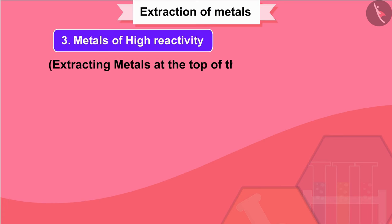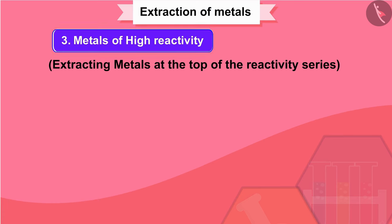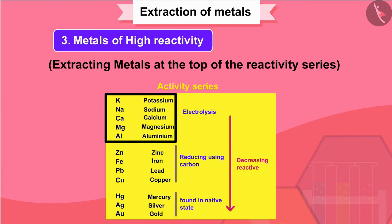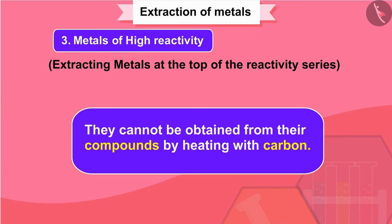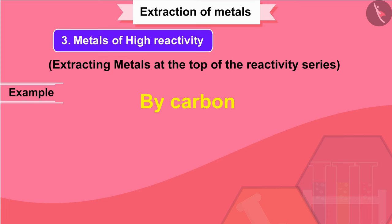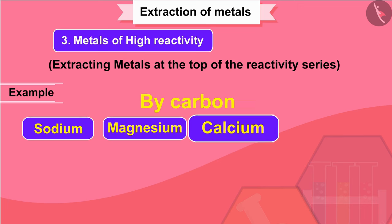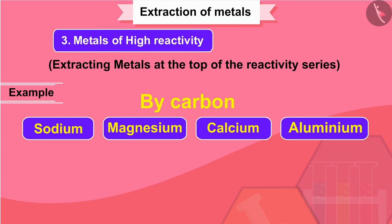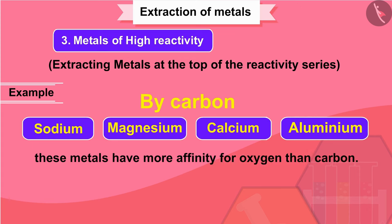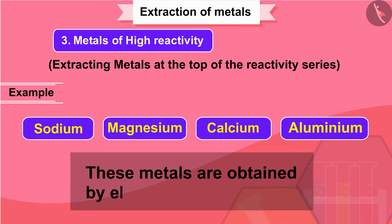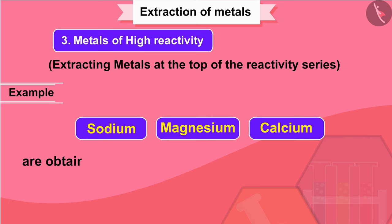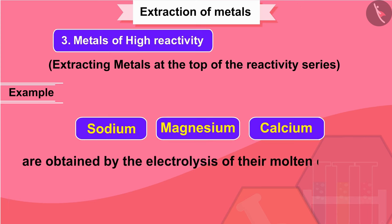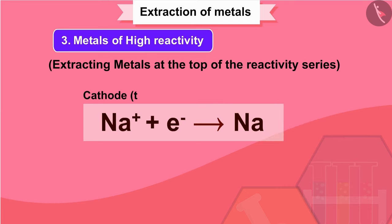Extracting metals at the top of the reactivity series: highly reactive metals are very reactive and cannot be obtained from their compounds by heating with carbon. For example, carbon cannot reduce the oxides of sodium, magnesium, calcium, or aluminium to the respective metals, because these metals have more affinity for oxygen than carbon. These metals are therefore obtained by electrolytic reduction. For example, sodium, magnesium, and calcium are obtained by the electrolysis of their molten chlorides. The metals are deposited at the cathode (the negatively charged electrode), whereas chlorine is liberated at the anode (the positively charged electrode).